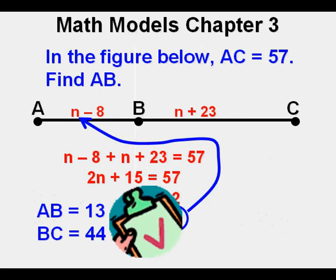Now let's go back and fix our work. Negative 8 plus 23 is 15. From here you'll get 2n equals 42, then n equals 21. Then n minus 8 equals 13, so AB is 13. BC would be 21 plus 23 or 44. And since 13 plus 44 is 57, that would check our answer.